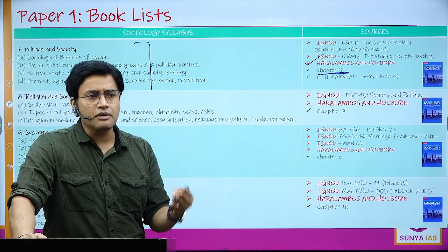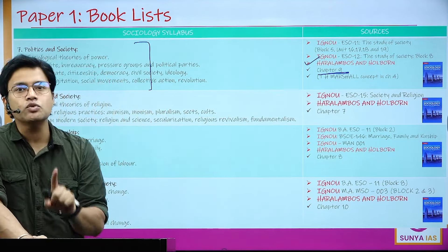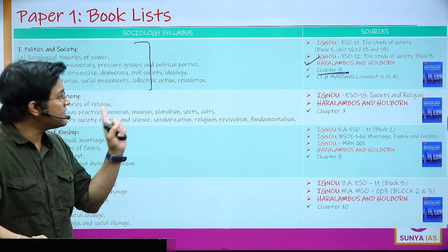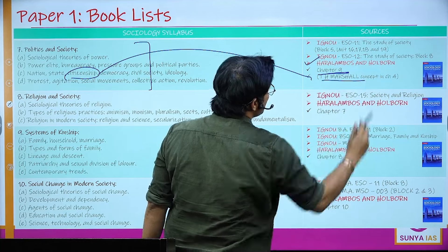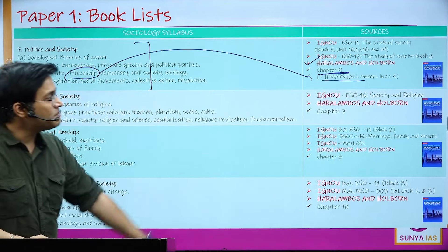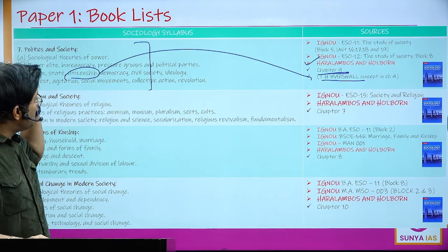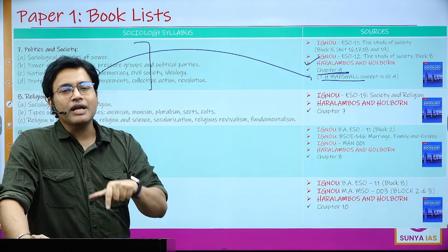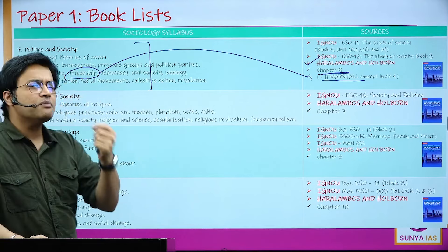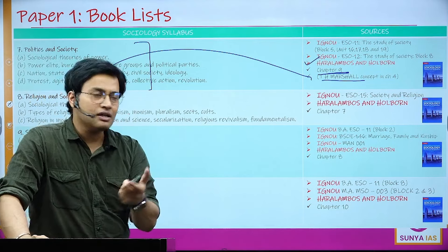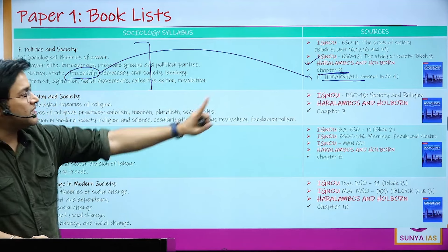Haralambos Chapter 9 also covers pluralist theory, elite theory, Michael Mann's theory, and Foucault's theory of the panopticon. Use the index of Haralambos — for example, T.H. Marshall's concept of citizenship is in Chapter 4. For smaller topics like nation-states, citizenship, and democracy, generally 10-mark questions are asked. Even for 20-marker questions, sufficient content is provided. Start using the index of standard books, especially Haralambos.